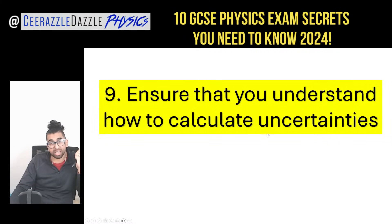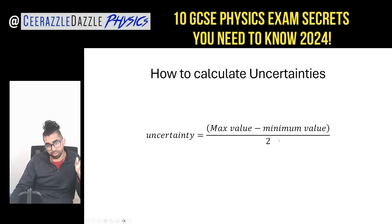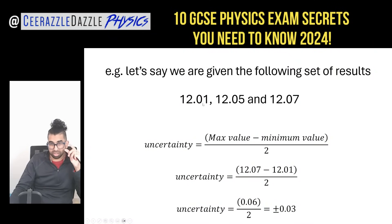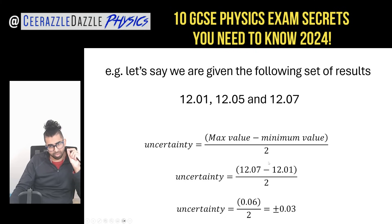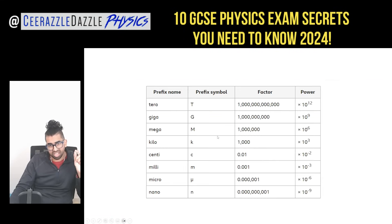Tip nine: ensure you understand how to calculate uncertainties. The formula is: uncertainty = (maximum value − minimum value) ÷ 2. For example, with results 12.01, 12.05, and 12.07, the uncertainty is (12.07 − 12.01) ÷ 2 = 0.06 ÷ 2 = ±0.03. Make sure you can use that formula — it will not be given to you in the exam.